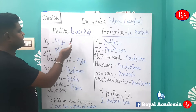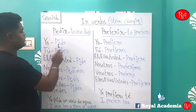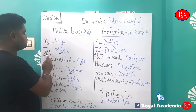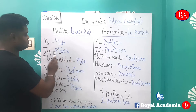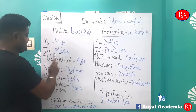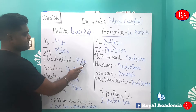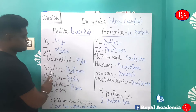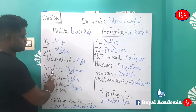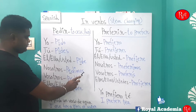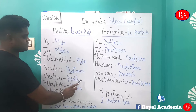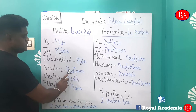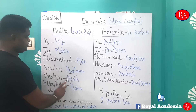For the 'yo' form it becomes 'pido' — the 'e' changes to 'i'. 'Tú pides', 'él/ella/usted pide' — I have underlined these forms. 'Nosotros pedimos', 'vosotros pedís' — the 'y' will remain the same for nosotros and vosotros.